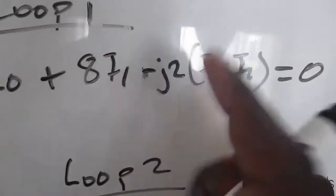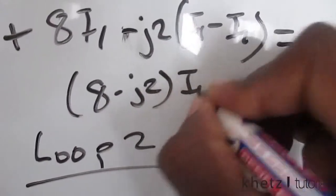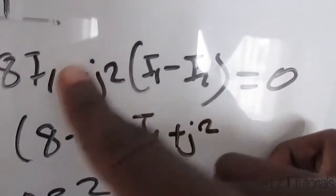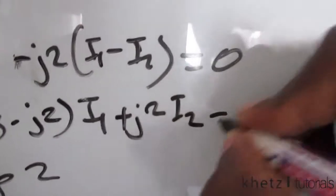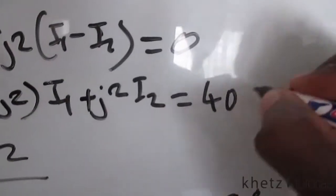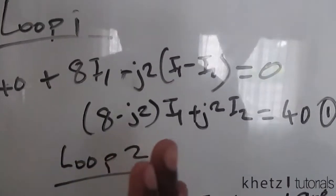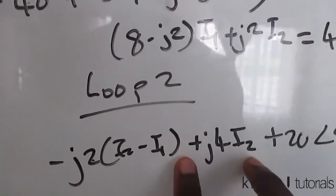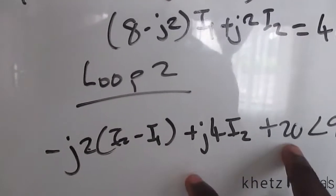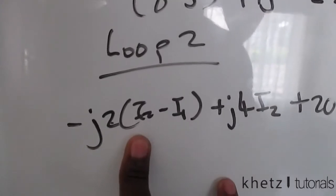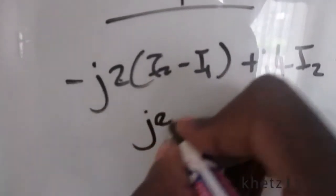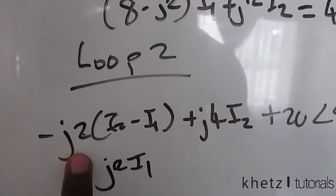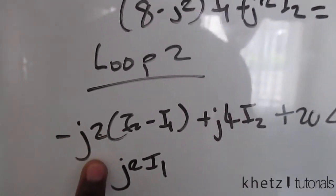Combining like terms: for equation one we have (8 − j2) associated with i1, and for i2 we have positive j2 (two negatives make a positive). Taking the constant to the other side gives us our first equation. For equation two, we have j2 associated with i1, and for i2 we have j4 − (−j2) = j4 + j2, giving j2 associated with i2 as well.